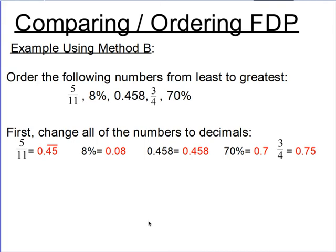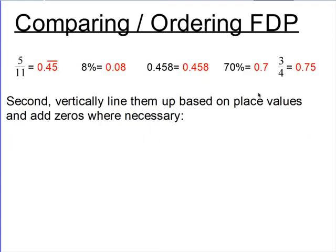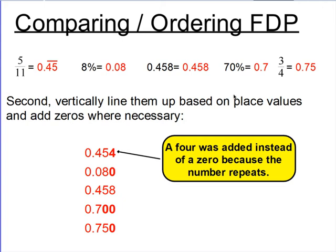The second method we're going to use is to line up all of these decimals vertically so the decimal points line up — the tenths places line up, the hundredths places line up, so every place value lines up. I added zeros in so that all of the numbers except the repeating one ended in the thousandths place. You'll also notice I added a four instead of a zero in that space for five elevenths, because five elevenths is a repeating decimal. The number that would come after five would be another four — it would not be a zero.